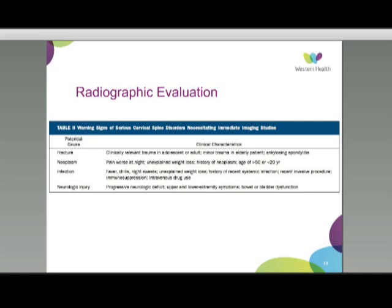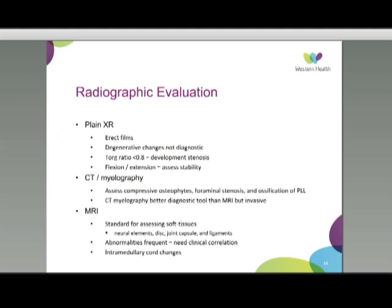Radiographic evaluation starts with plain X-ray. Patients should initially have erect films taken in their normal standing posture. Degenerative changes alone are not diagnostic. We can assess the TORG ratio — the ratio of the spinal canal to the AP diameter of the vertebral bodies. A ratio of less than 0.8 indicates developmental stenosis, placing patients at increased risk of myelopathy and cord injury with major cervical trauma. Flexion and extension views can also help assess cervical spine stability.